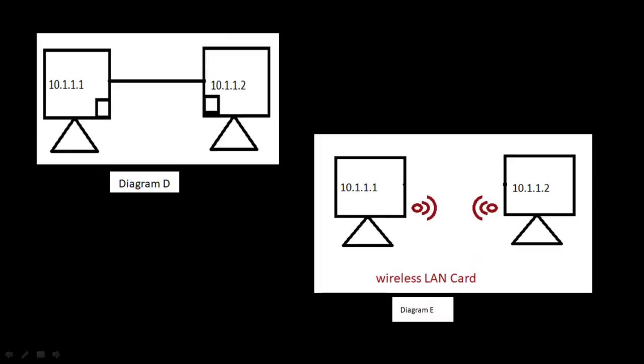As you can see in diagram D, we have two computers and we will connect these two computers with the help of a cable. This cable will be connected on the LAN port of the machine. We will assign an IP address at the LAN card of the computer and these two machines will be able to communicate with each other.